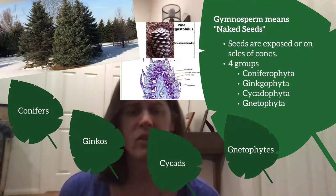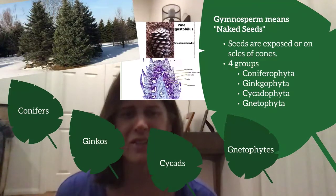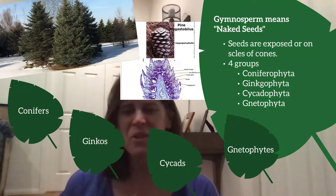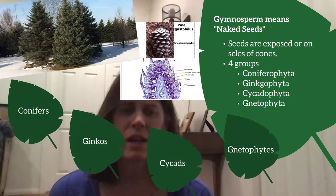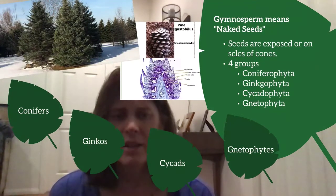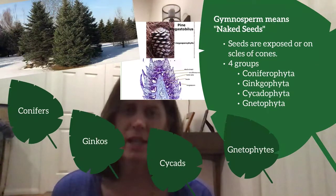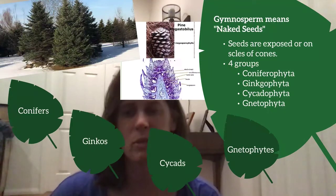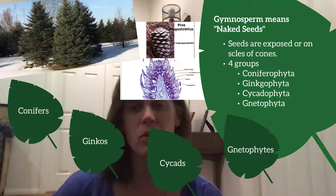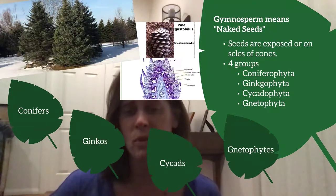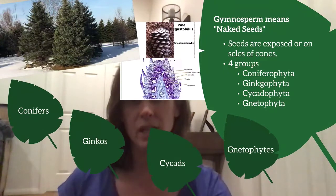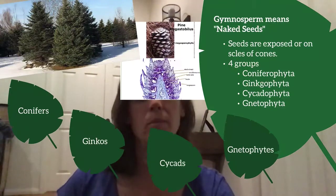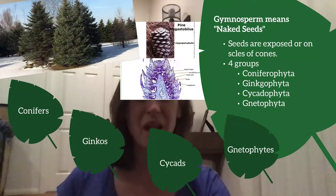Seeds are exposed on the scales of the cones. There are four main groups of gymnosperms: Coniferophyta, Ginkophyta, Cycadophyta, and Gnetophyta. You won't be responsible for those phylum names yet, but you should be familiar with the common names: conifers, ginkgos, cycads, and gnetophytes. At the end of the semester we'll go through phylogeny and you will be responsible for these terms, so get used to reading them now.